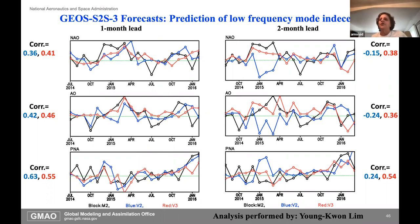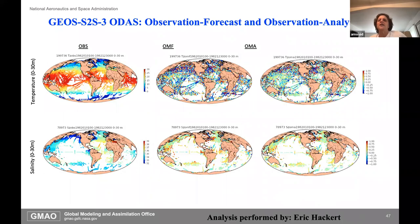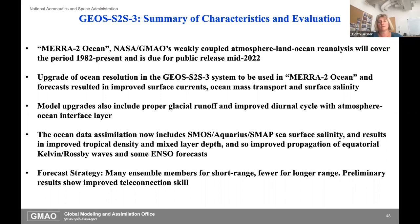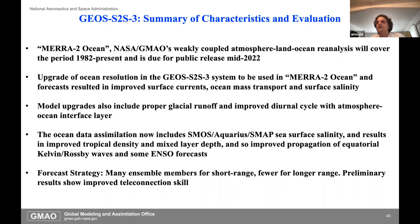Looking at low-frequency mode indices, in month two the higher ensemble size really bought us some nice, respectable predictability for some of these other modes. We also look at the observation-minus-forecast from the ocean. In summary: MERRA-2 ocean will cover 1982 to present with public release middle of next year—we've started the calculation already. The upgrade in ocean resolution really bought us a lot in terms of transport and salinity. The big change in forecast strategy is lots of ensembles for short range and fewer for longer range.